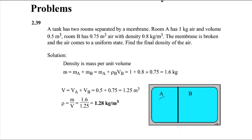This is a simple thermodynamics problem. Since we are finding the final density, the final density would be the final mass divided by the final volume. To find the final mass of the air in the room, we have the mass of air in Room A, which is given as 1 kg.